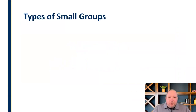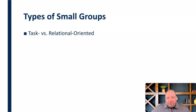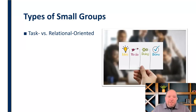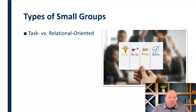When we think about the different types of groups, first we look at orientation. Is this a task-oriented group or a relational-oriented group? Task-oriented groups are formed to solve a problem — they promote a cause, they generate ideas or information, they have a to-do list — things that they're trying to accomplish with a specific goal in mind.